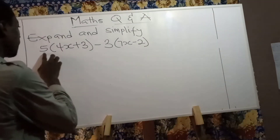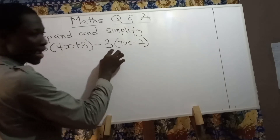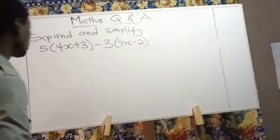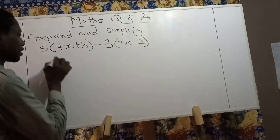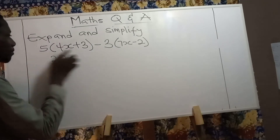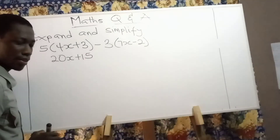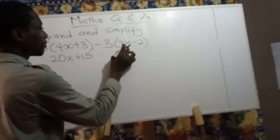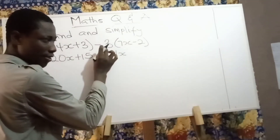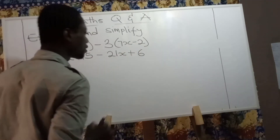We know expansion means multiplying the number outside the bracket by each term in the bracket so that you remove the bracket. So 5 multiplying 4x gives you 20x. 5 multiplying positive 3 gives you 15. Then negative 3 multiplying 7x gives you negative 21x, and negative 3 multiplying negative 2 gives you positive 6.